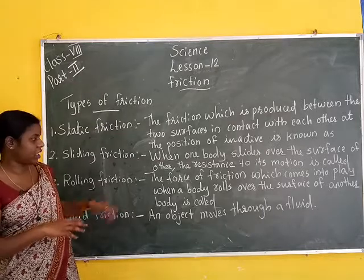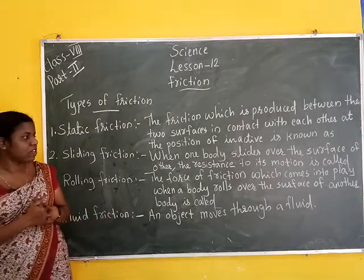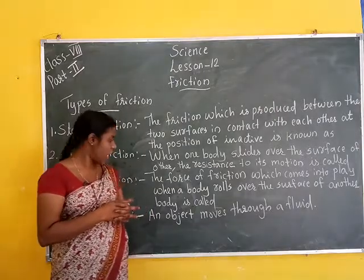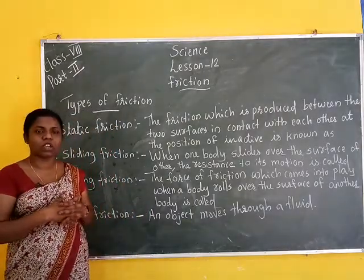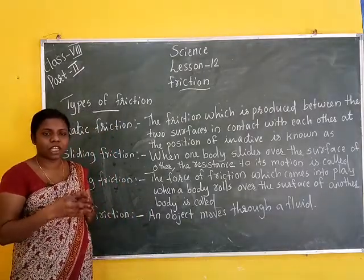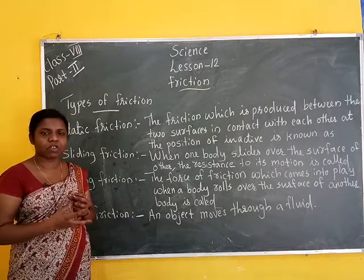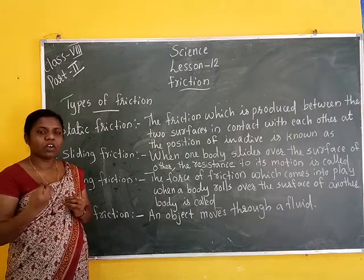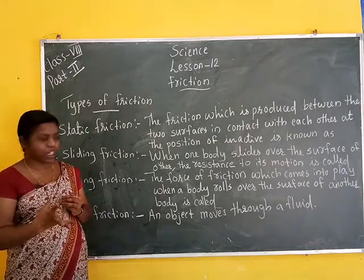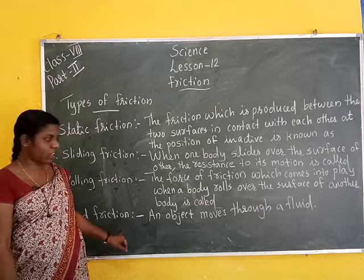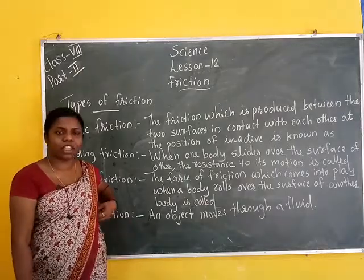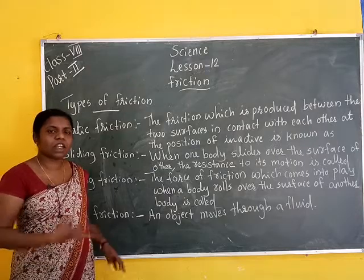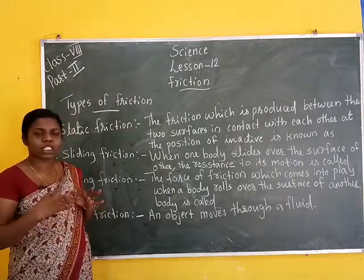Rolling friction is the force of friction when a body rolls over the surface of another body — for example, wheels on a trolley help reduce friction. Fluid friction occurs when an object moves through a fluid, which helps decrease friction between two surfaces.